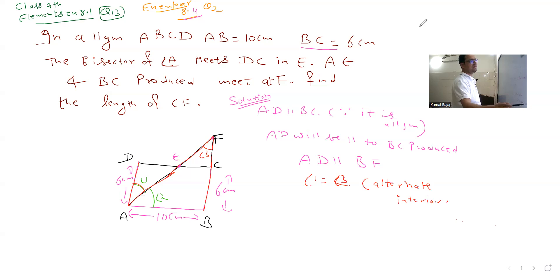Angle 1 is equal to angle 2. This is given in the question because line AF is the bisector of angle A. From both conditions, we can say that angle 2 is equal to angle 3.